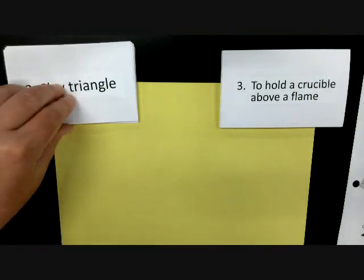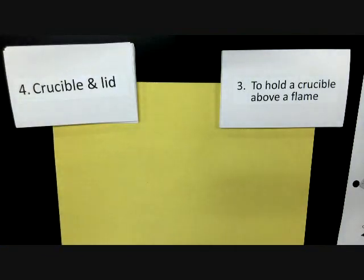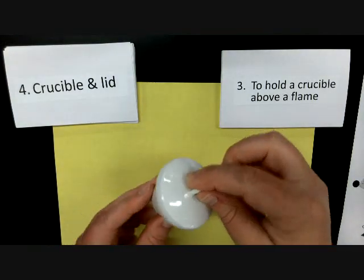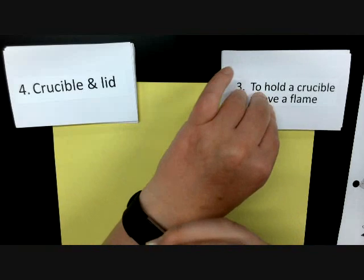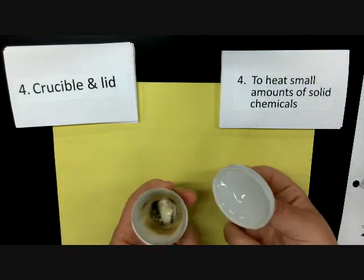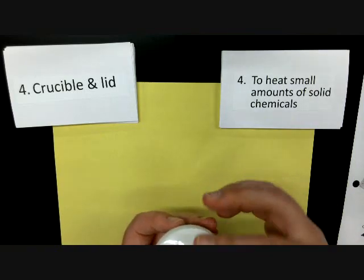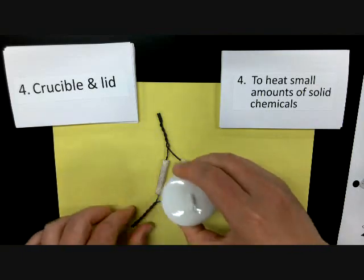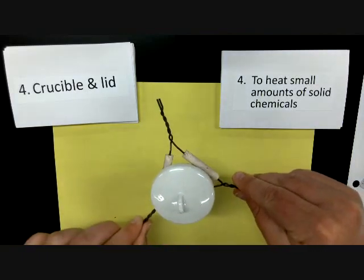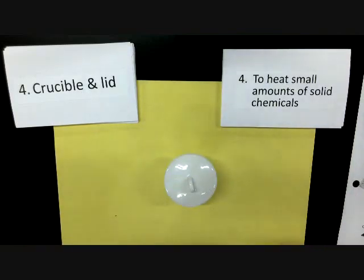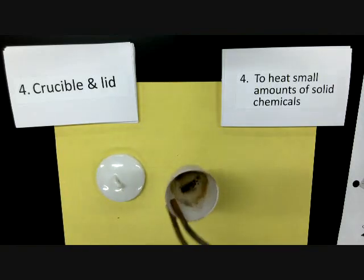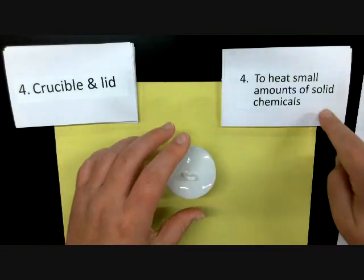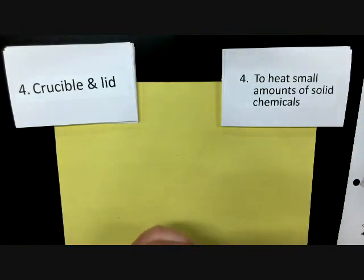We've mentioned crucible twice now, so the next one is a crucible and lid. A crucible looks like a little acorn. The crucible is used for heating small amounts of solid chemicals. We would put a small amount of chemical in here and then use our clay triangle to suspend it over a flame. When we need to move the crucible we don't like to use our hands — especially if it's been heated and is hot — so we use the tongs.